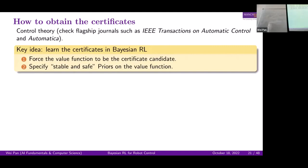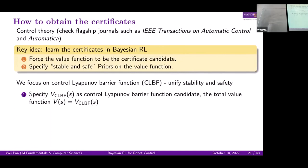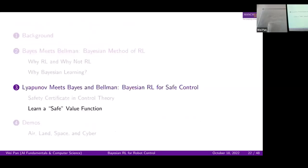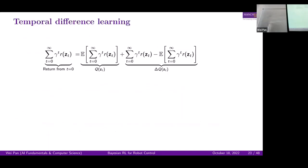Our idea is to learn the certificate from data in Bayesian reinforcement learning. First, we force the value function to be the certificate candidate. Second, we specify stable and safe priors on the value function. The value function is the certificate candidate — we focus on the control Lyapunov function, specify it as the value function, and construct the prior distribution P(V) encoding the qualities of a control Lyapunov function. Then we simply use the Bayesian route to get the posterior of the value function over the observations — basically the reward. How to learn a safe value function? We can use temporal difference learning and stack observations from t=0 to T, essentially solving a linear regression problem, encoding the energy decreasing inequality as a constraint.